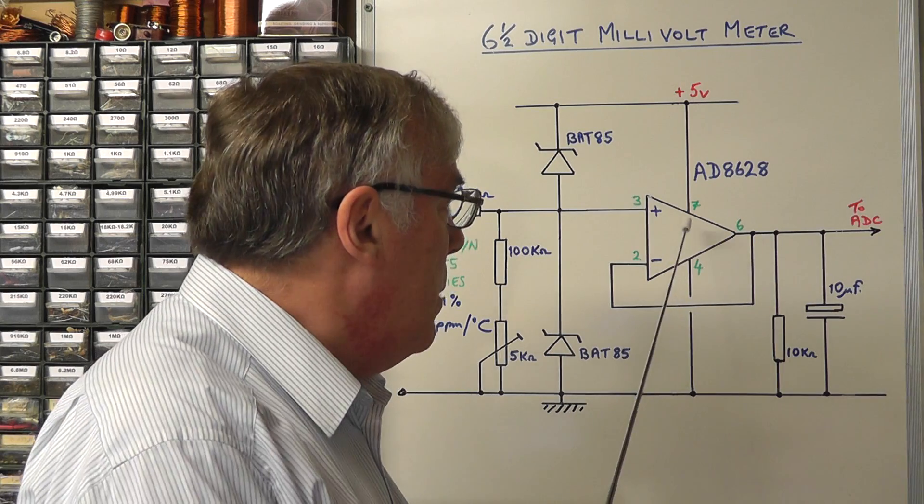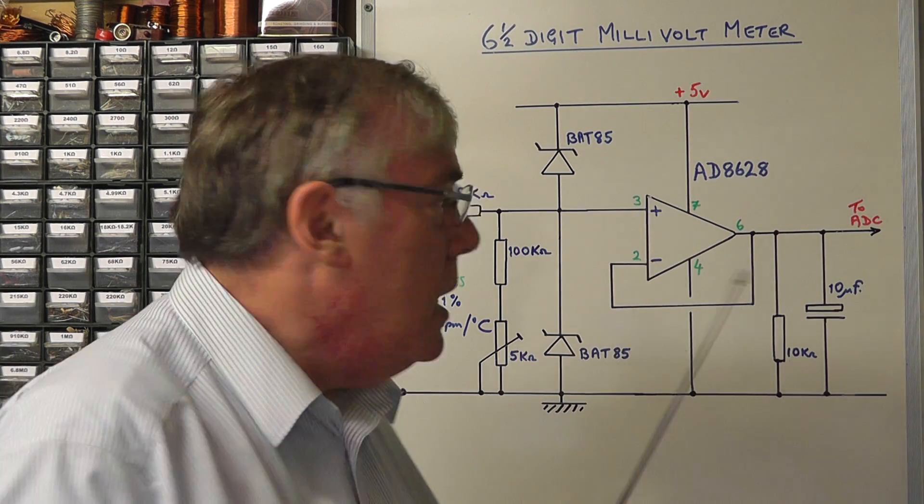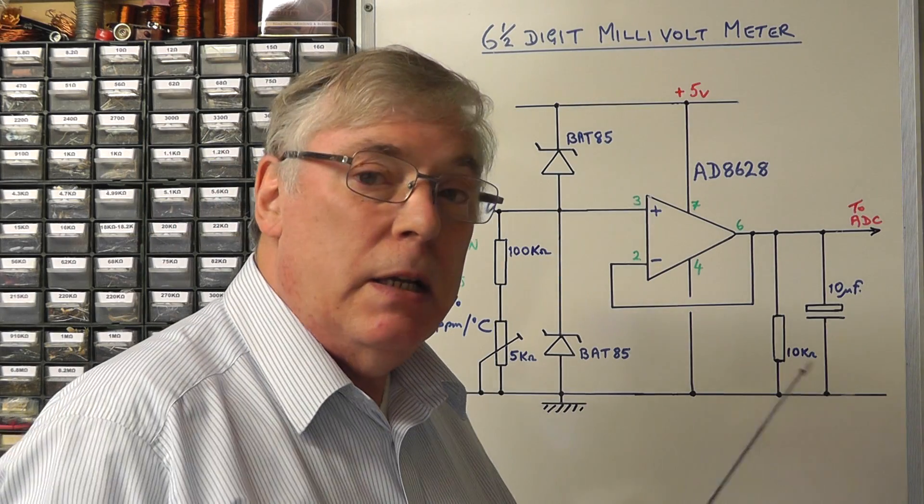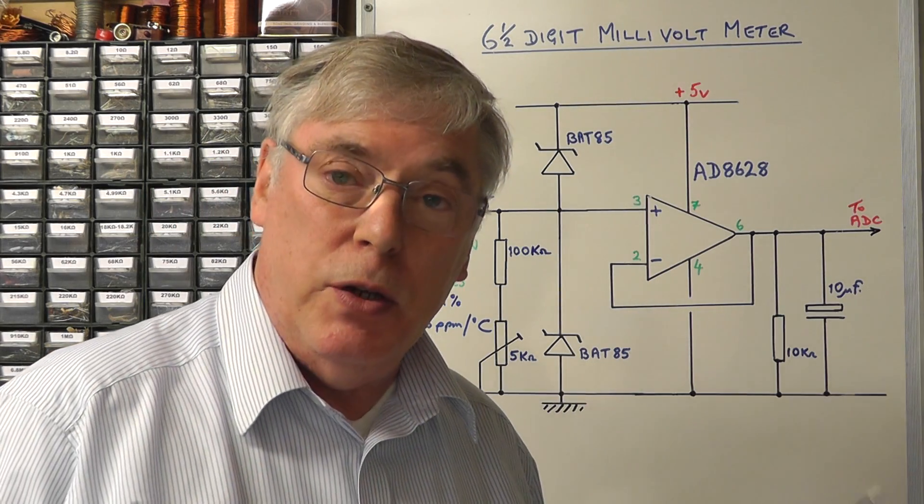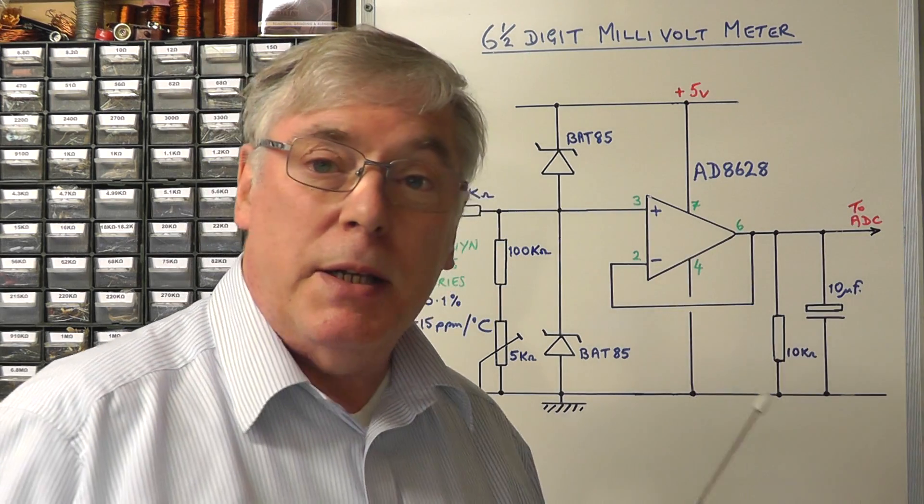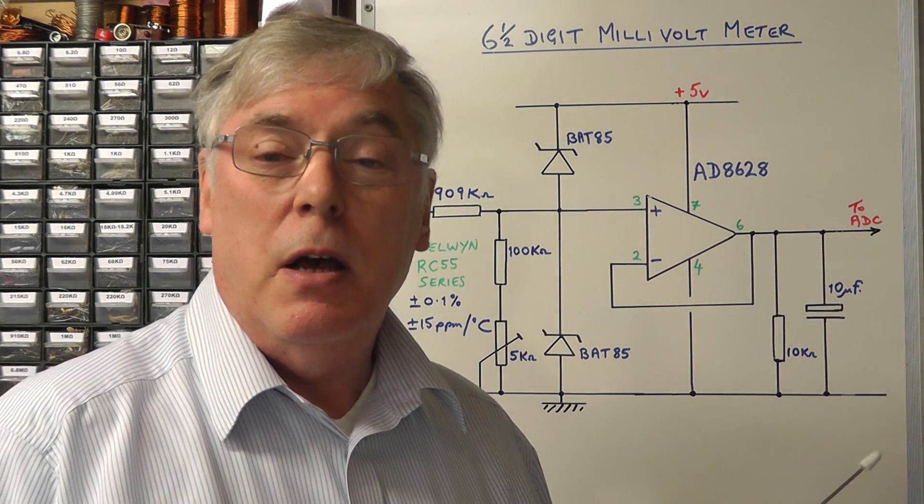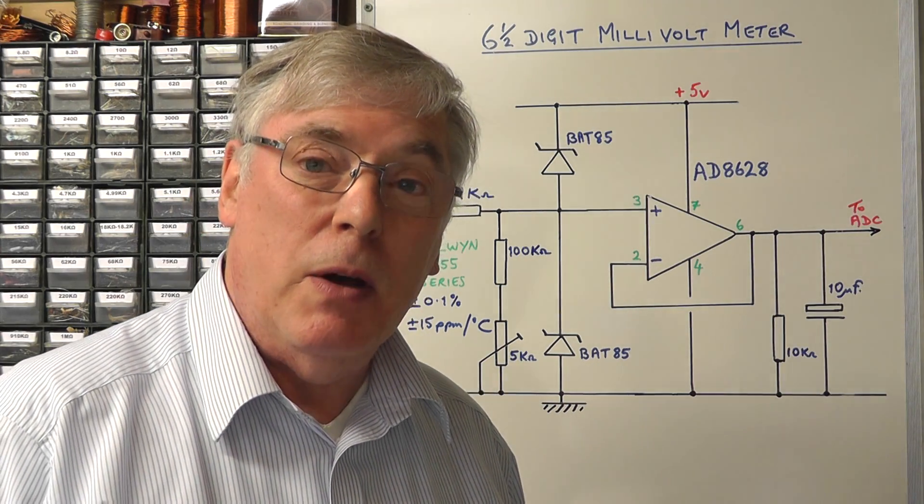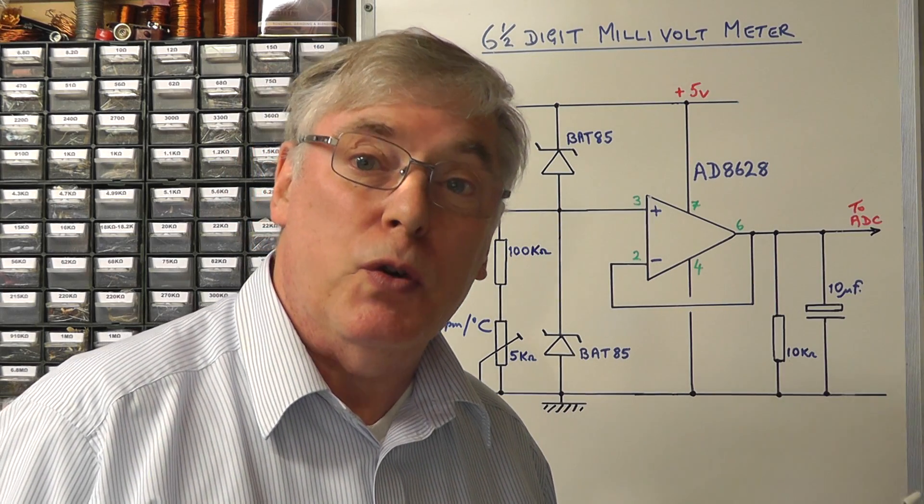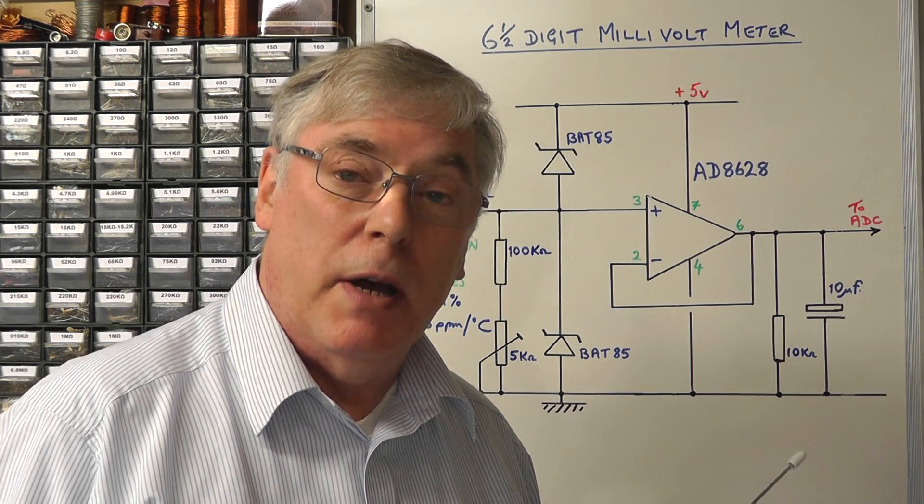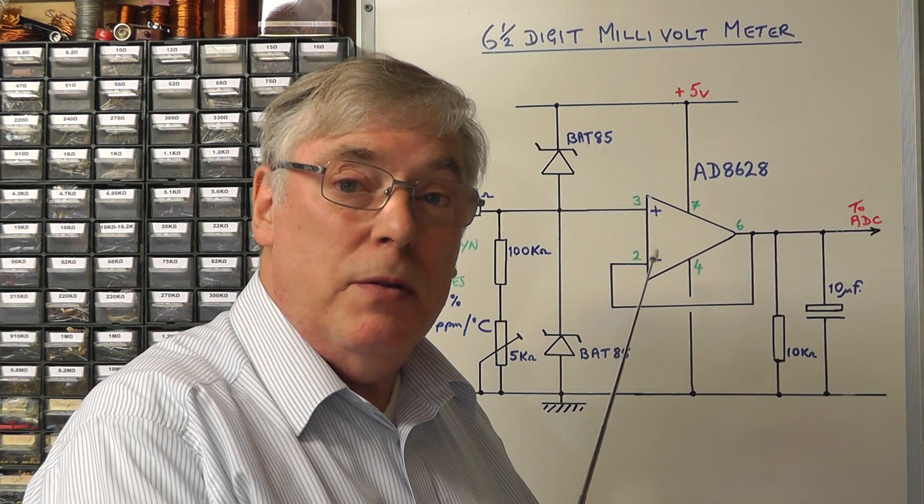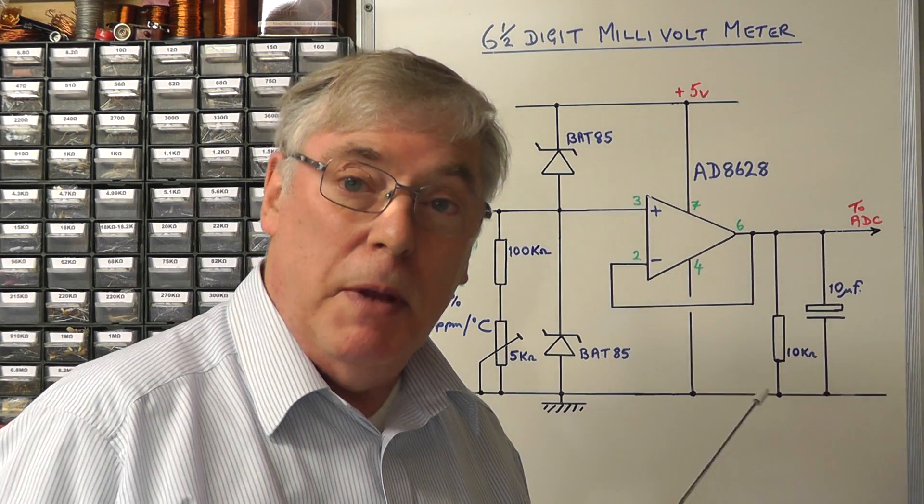The main change I've made is to replace the op amp at the input with the AD8628. Remember before we had the OP777. Now that suffered from a few issues with regard to the input offset voltage even though it was low. This particular op amp has an input offset voltage error of one microvolt which is extremely low and a long-term drift of plus or minus 0.002 microvolts per degree centigrade. So it's virtually zero and I found that using this improves the accuracy of the millivoltmeter tremendously.